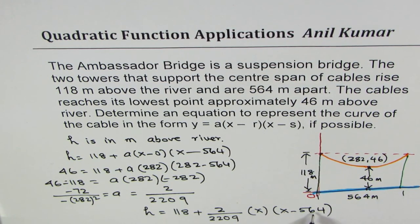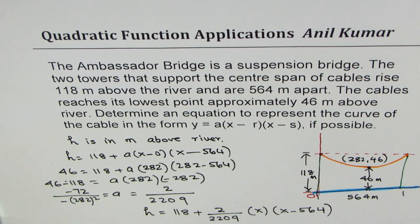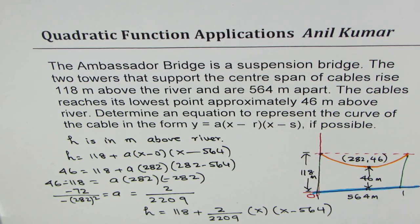The term x times x minus 564 will always be a negative term, so we'll be subtracting from 118 to get the height of the cable. That is how you could write or model the situation in factored form. I hope you understand and appreciate it. Thanks and all the best.